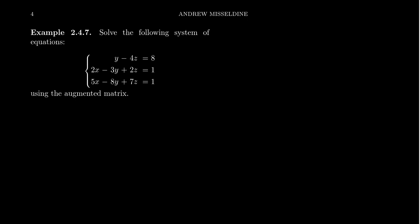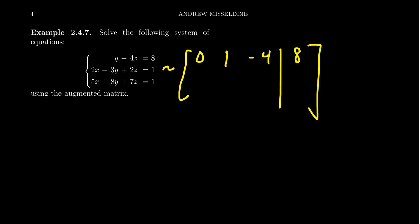The first thing is, given the system of linear equations right here, you have the first equation: y minus 4z equals 8. The second equation is 2x minus 3y plus 2z equals 1. And finally, 5x minus 8y plus 7z is equal to 1. The very first thing you're going to do is write this as an augmented matrix.